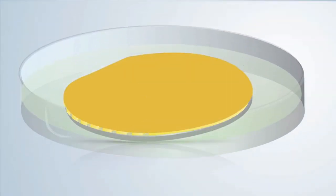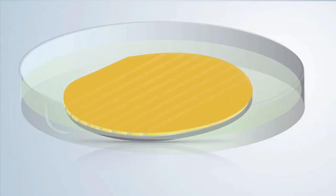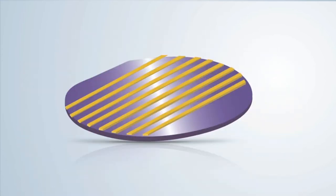Any area where the EBL resist was removed is where the metal sticks to the substrate. When we dissolve away that EBL resist in acetone, the metal that's sitting on top of the resist is also removed.